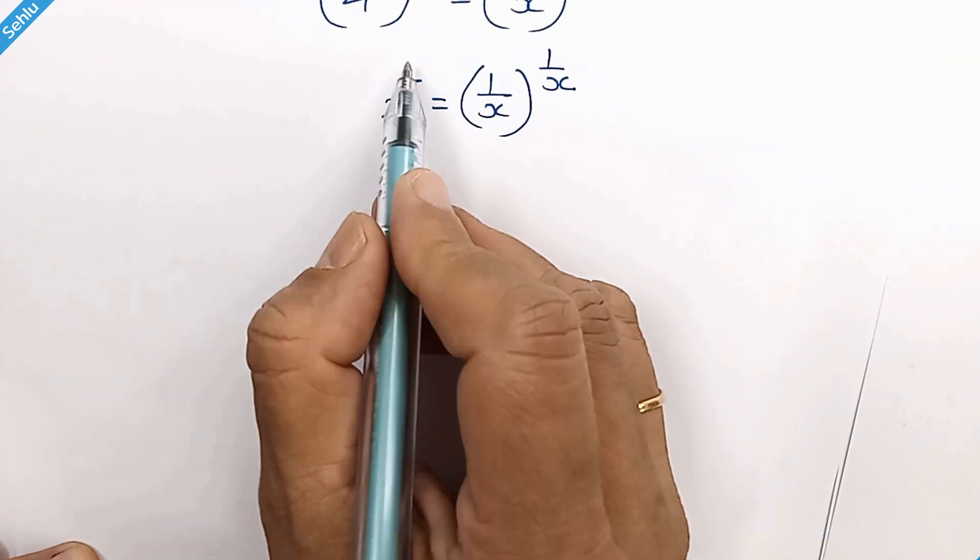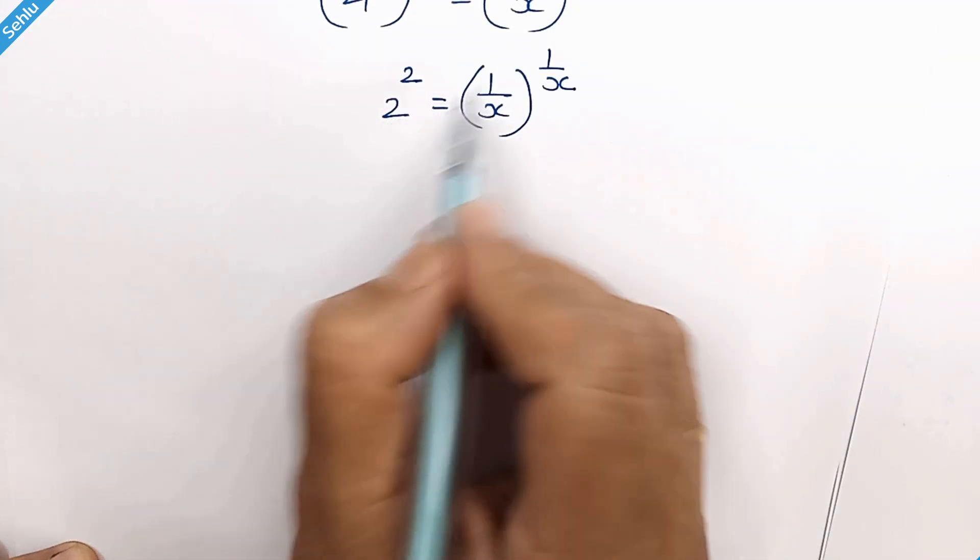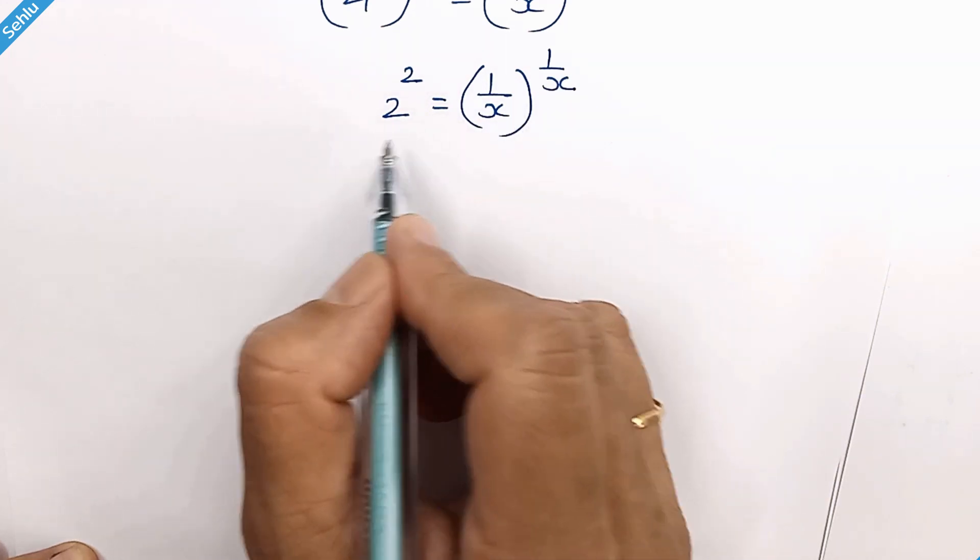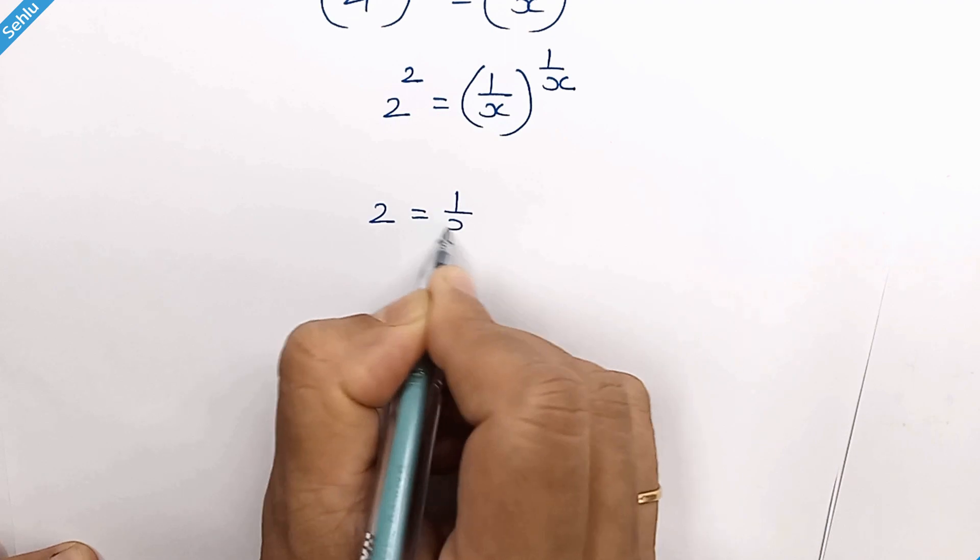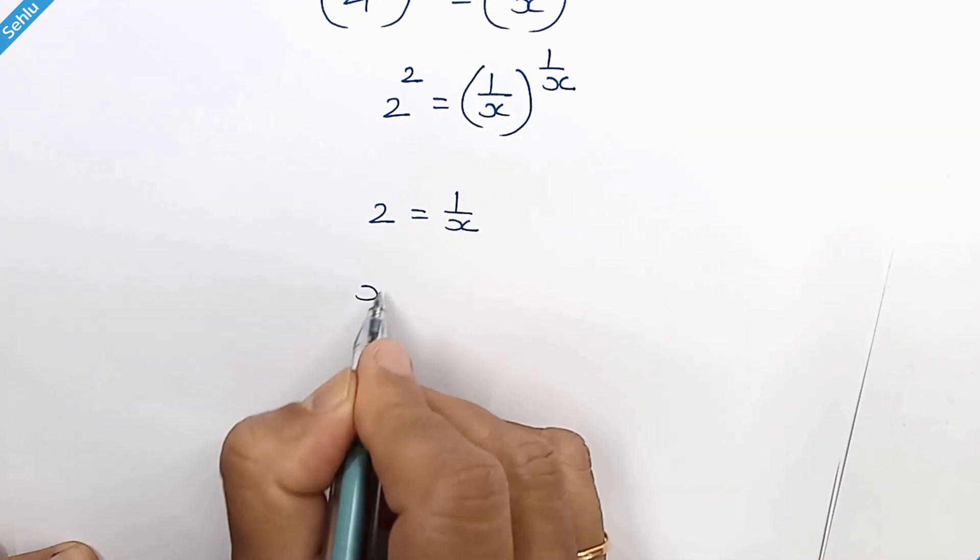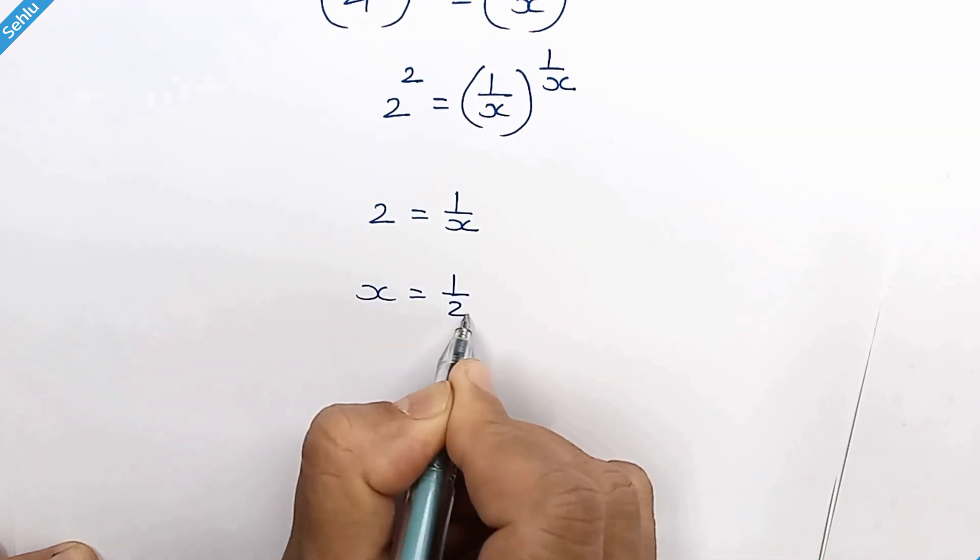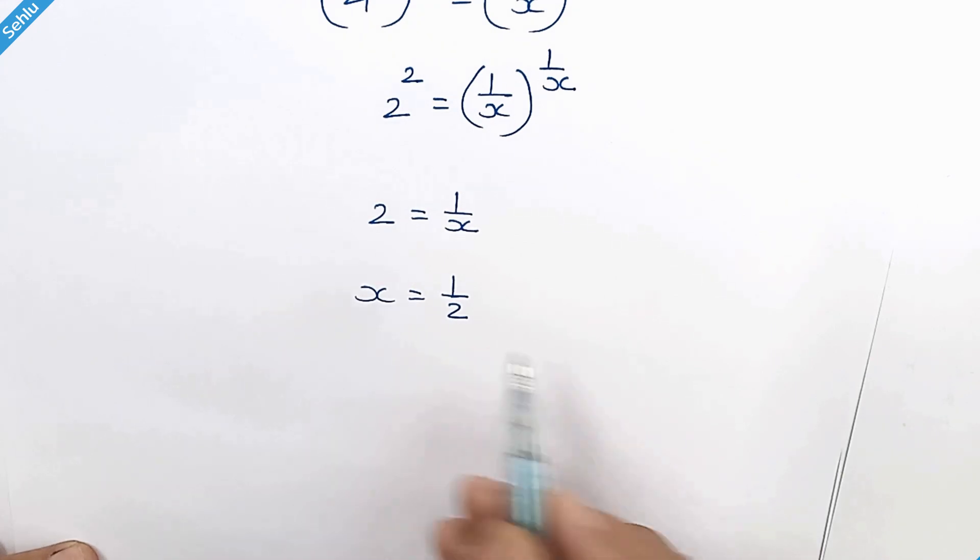Now we have base and exponent are same at both the sides. So we can try comparing them. 2 is equal to 1 over x. So x is equal to 1 over 2. We have found x is equal to 1 over 2.